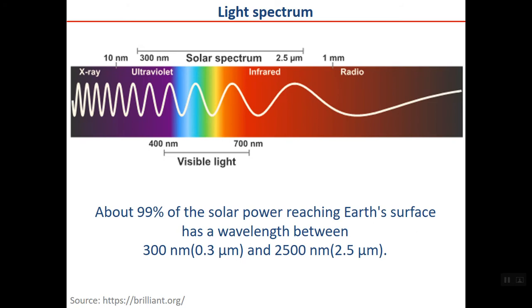This is the light spectrum, ranging from X-rays up to radio waves. About 99 percent of the solar power reaching the earth's surface has a wavelength between 300 and 2500 nanometers, which covers the area from ultraviolet through visible light and into infrared.